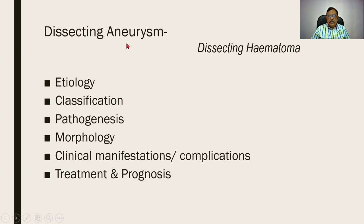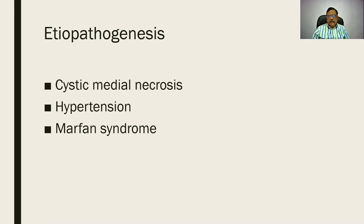The fourth type is the dissecting aneurysm. Robbins and other books note that 'dissecting aneurysm' is a misnomer and it is better expressed as a dissecting hematoma — however the term dissecting aneurysm is still prevalent. We shall see the etiology, classification, pathogenesis, morphology, clinical manifestations, and treatment. Think of these subheadings — they will take you to the answer. Three basic mechanisms in the pathogenesis are: cystic medial necrosis, hypertension, and Marfan syndrome.